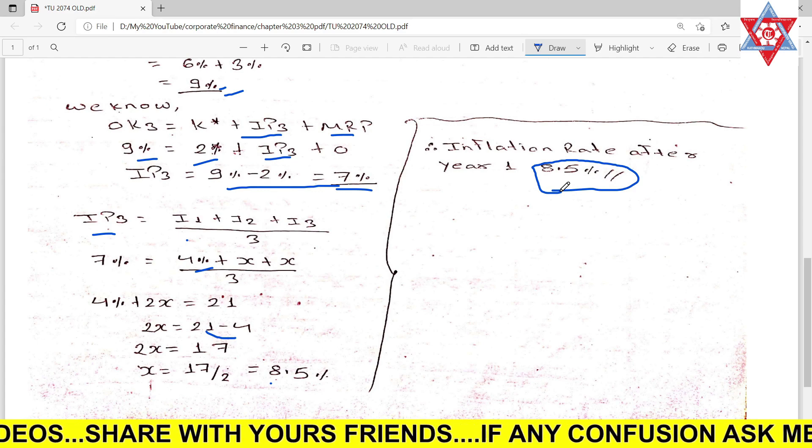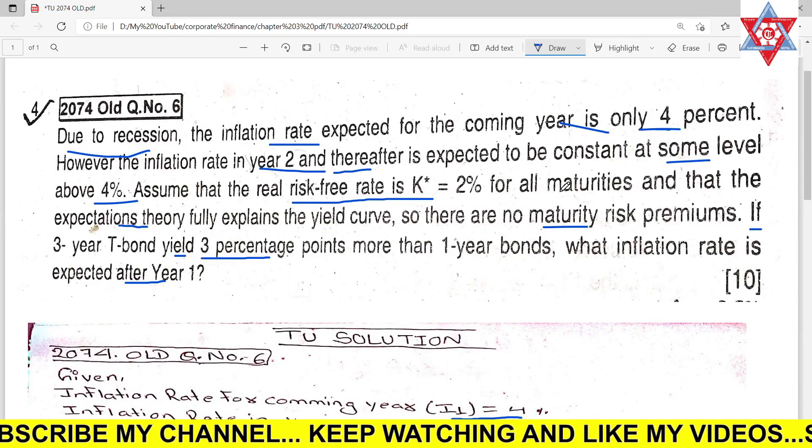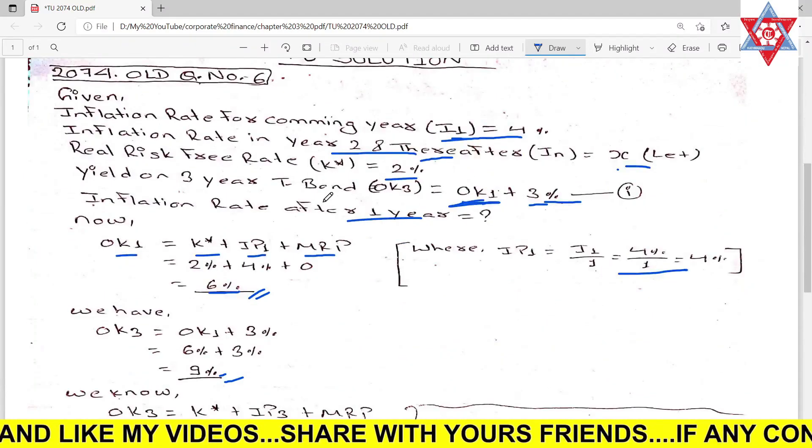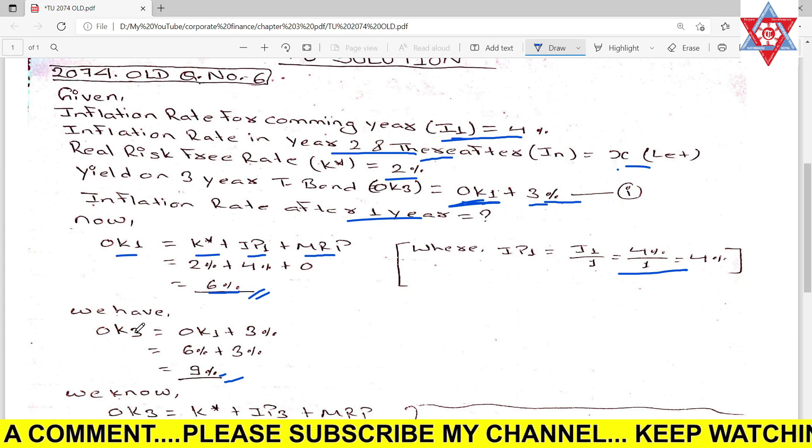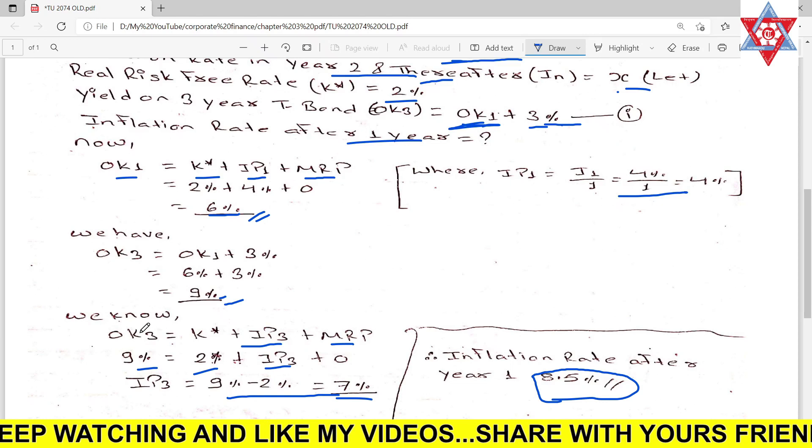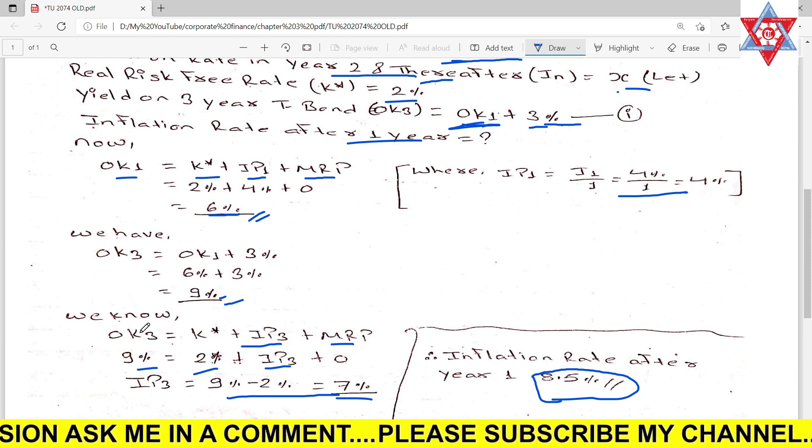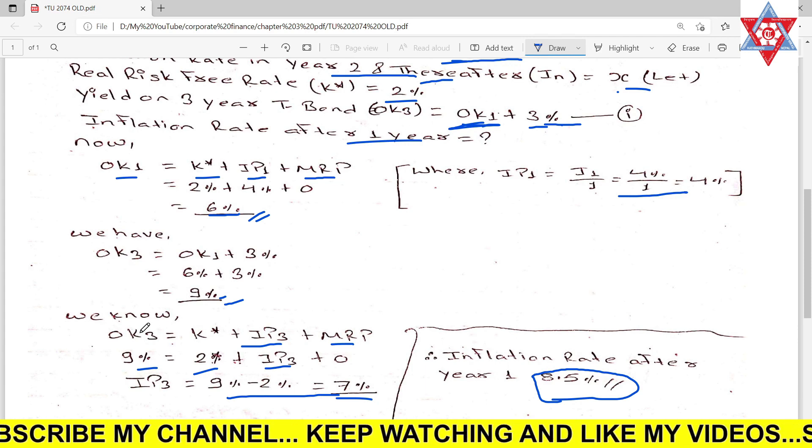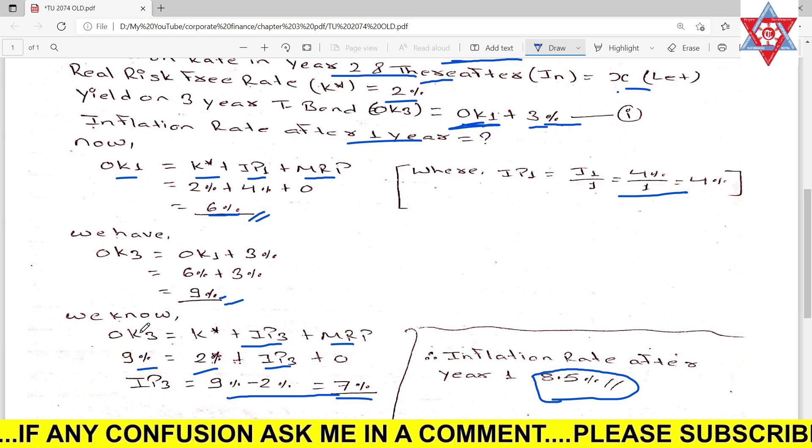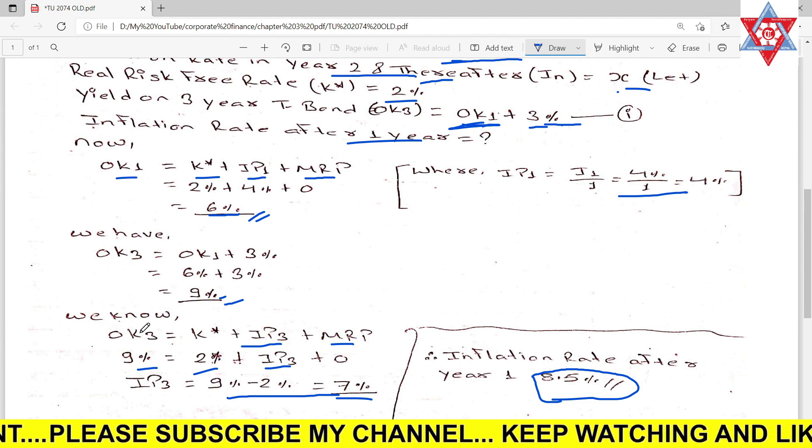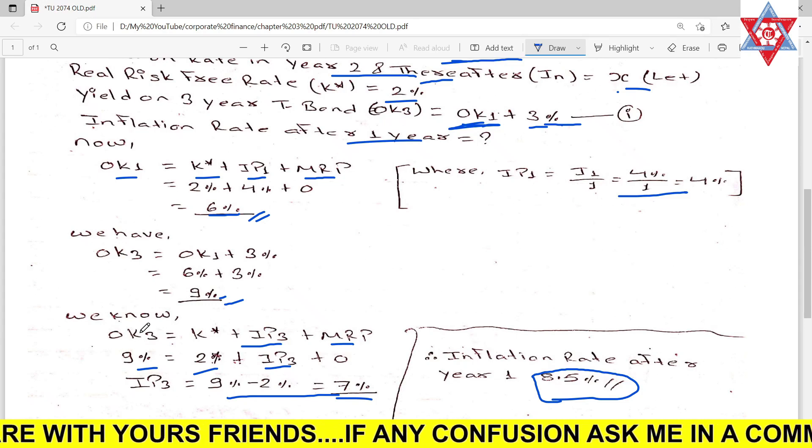This is 2074 old question number six. Similar questions are in 2069 question number five and 2064 old question number seven. If you have confusion, comment below. Thank you so much.